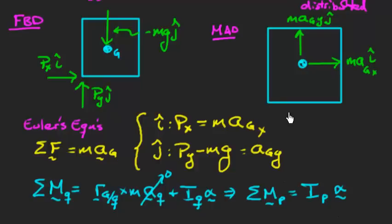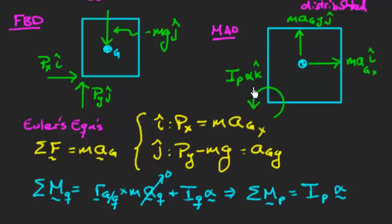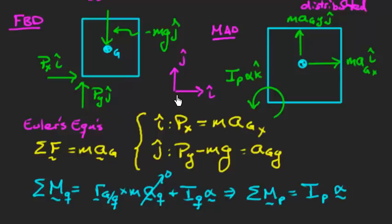Taking moments about point P gives I_P·α on the mass acceleration diagram. The angular acceleration is drawn counterclockwise because that's the positive k-hat direction — I expect alpha to come out negative when we solve, confirming the plate rotates clockwise as expected.